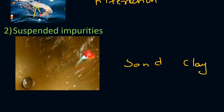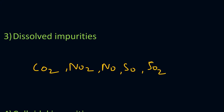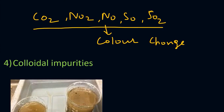The third type is dissolved impurities. Dissolved impurities refers to the dissolution of gases like CO2, NO2, NO, SO, and SO2 in water, which is quite harmful for drinking. These dissolved gases affect the water by causing a change in the color of the water.